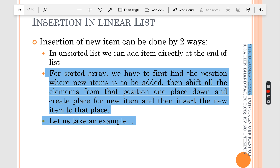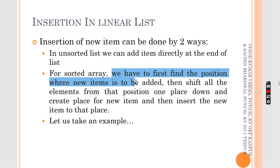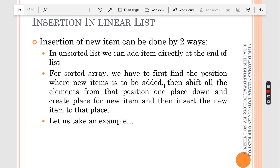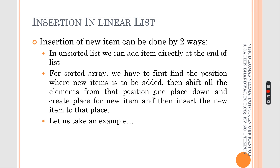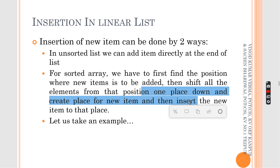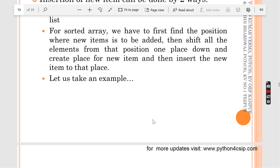If it is a sorted array, then what you are going to do is first find the position where the new item is to be added. So you are going to use a particular module — that is bisect. That is a bisect module, which will analyze the whole list using bisect and find out the position. At that position, then you are going to insert the element.